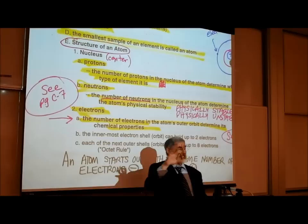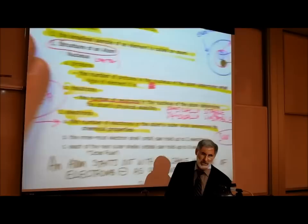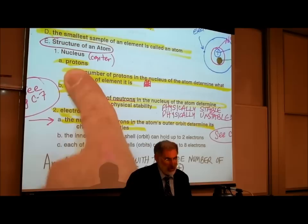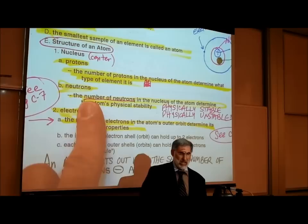In the center of the atom, in the nucleus, there are always positively charged protons, and there may also be neutral neutrons. Orbiting around the nucleus are negatively charged electrons.